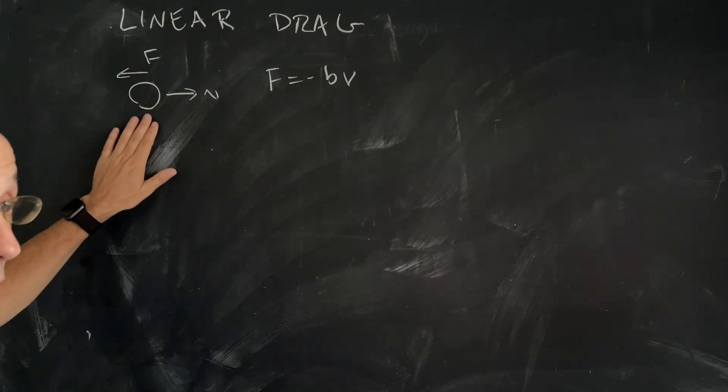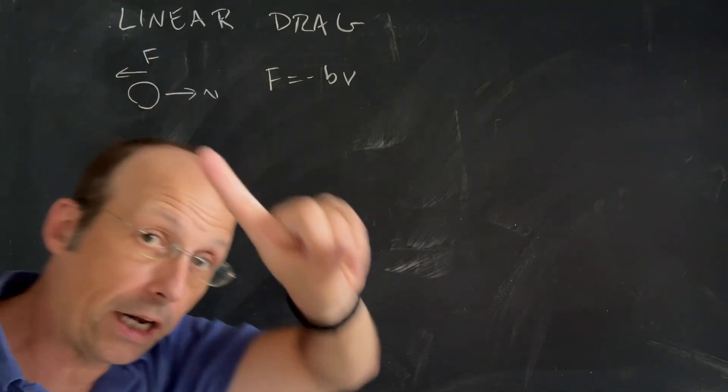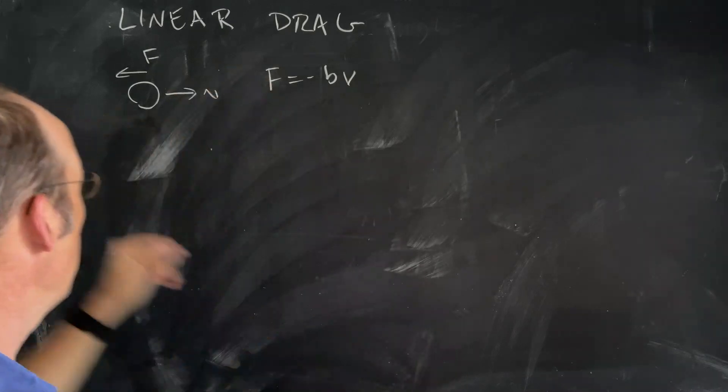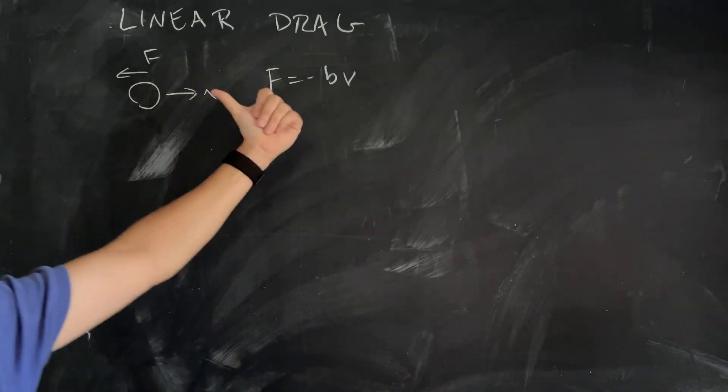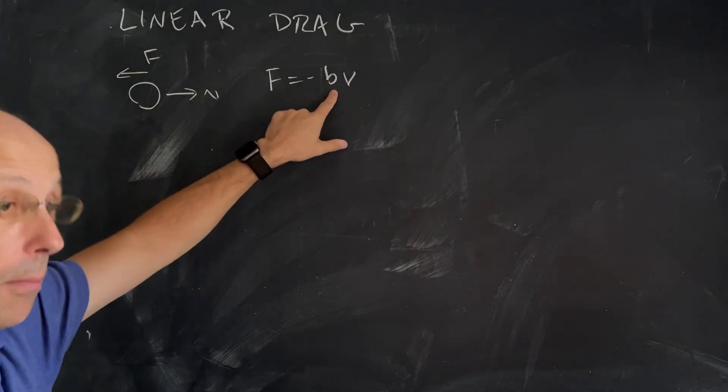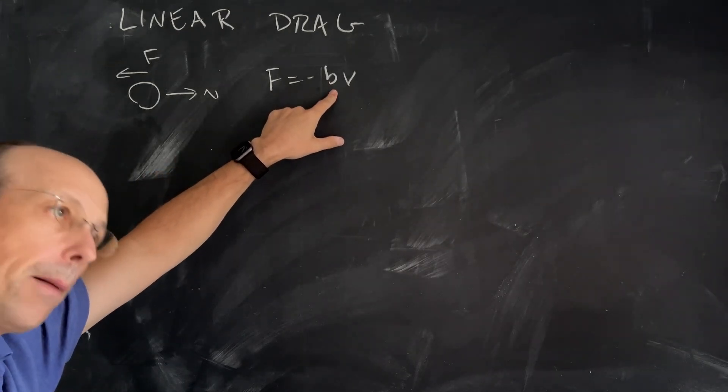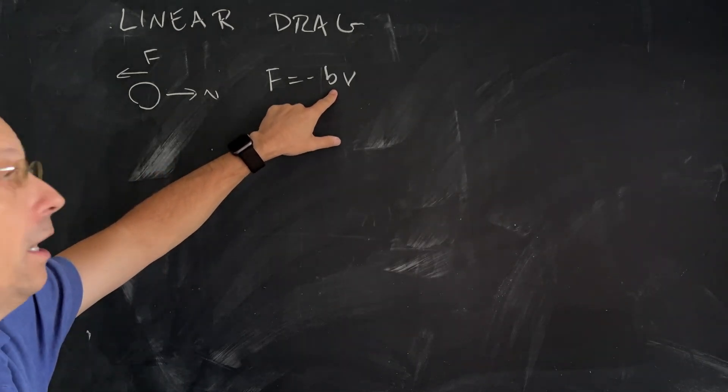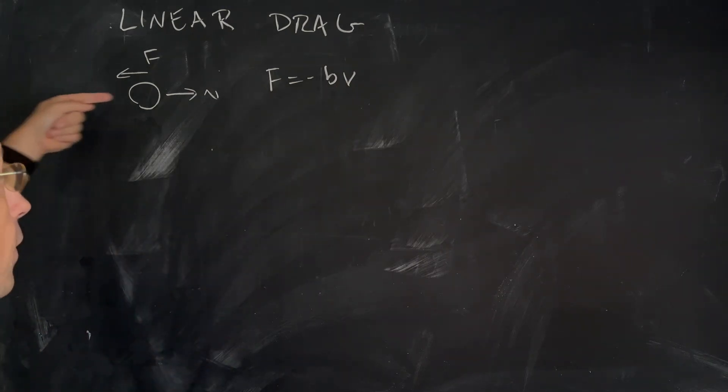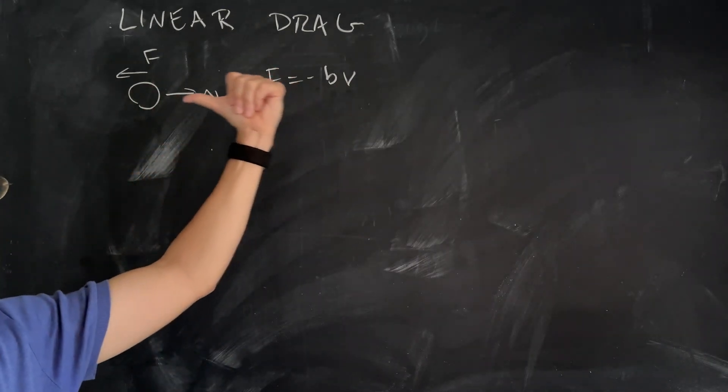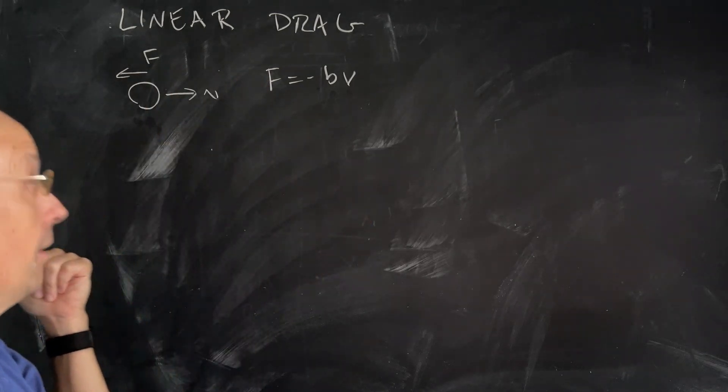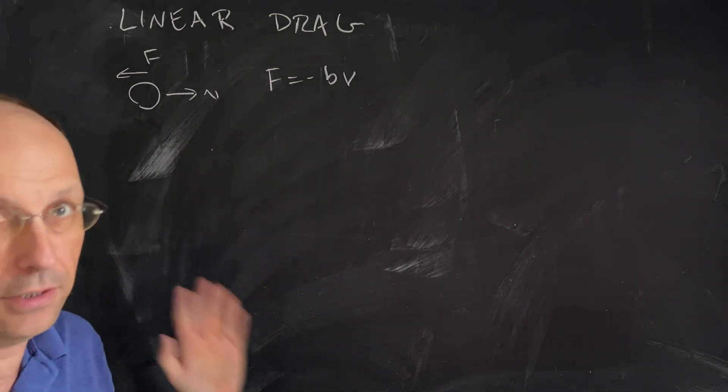Here I have a ball moving with velocity V in one dimension. There's no gravity here. We'll do gravity later. We're doing the very simple one-dimensional motion with backwards pushing air resistance force that's going to be some constant B that depends on the properties of the fluid, the size of the ball, the shape of the ball, times the velocity. If it's moving in the positive x direction, the force is in the negative x direction. That makes sense.